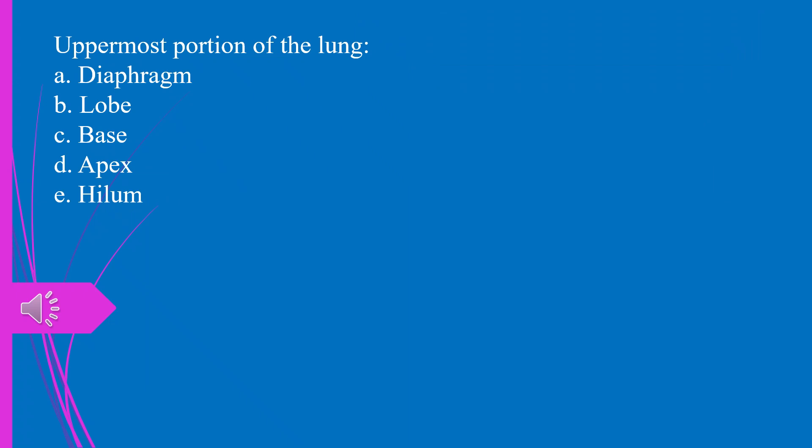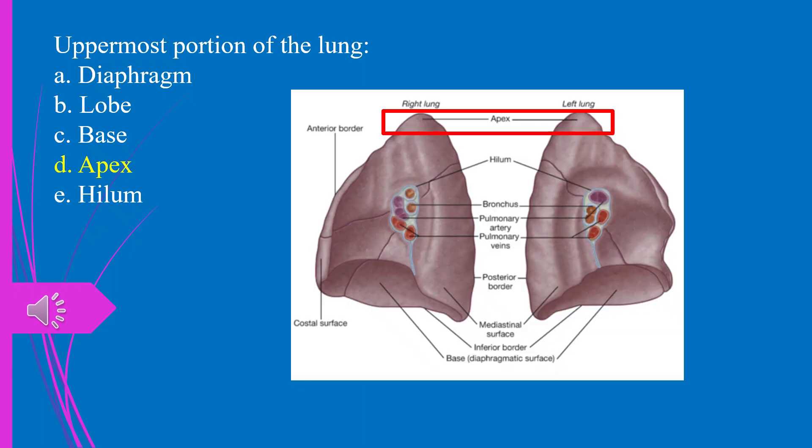Question 45. Uppermost portion of the lung: a) diaphragm, b) lobe, c) base, d) apex, e) hilum. The answer is d, apex.